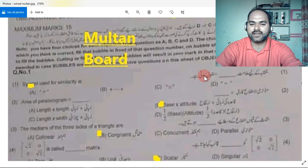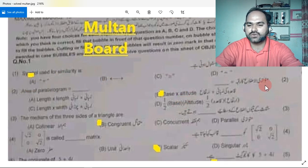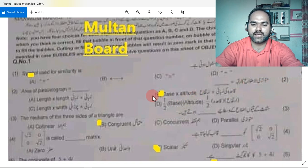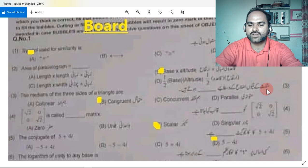Pehla jo MCQ hai toh iska A jawab durust hai, thik hai. Next, do mutawaziyat ijla ka rakhba hai toh iska durust jawab hai B. Teesra hai, musallisi ke musallasant opposite ya wastana hote hai toh kya hote hai? Mutamasal, congruent hote hai, thik hai.